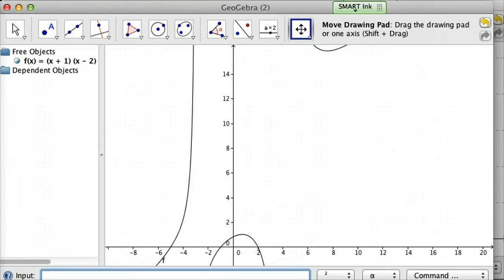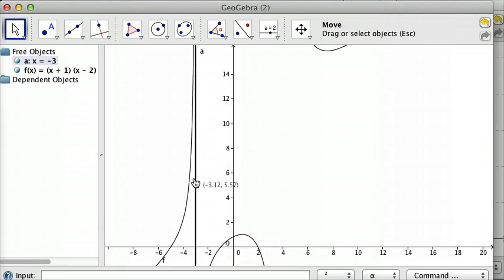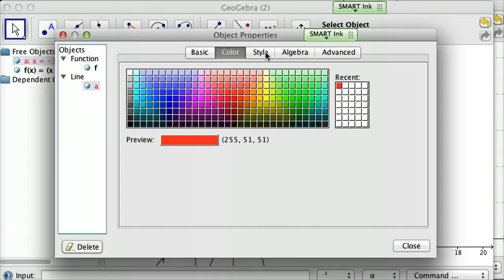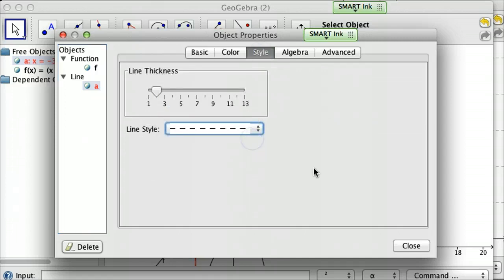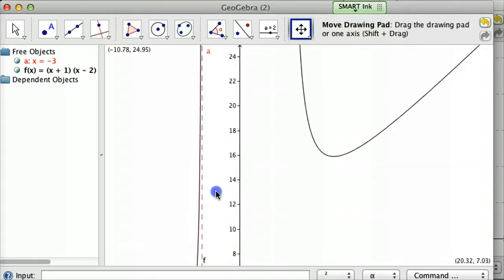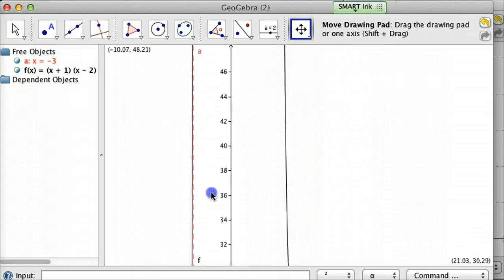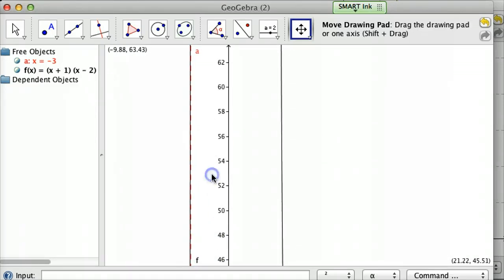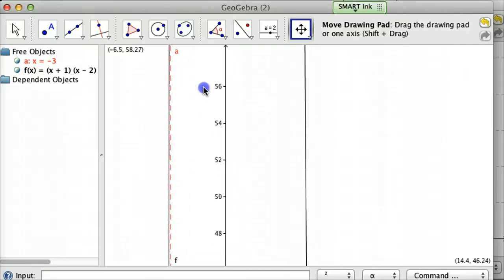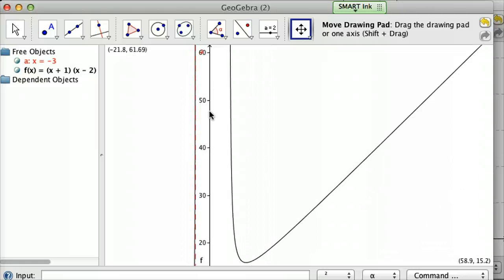So I'm going to type in X equals negative three. And there it is. I just popped in. I'll turn it a different color. Object properties, color, maybe red. Change it to a dotted line. And so there's an asymptote at negative three. And you can follow this thing as far up as you want. And it'll look like our black graph there and that dotted line converge. But if you zoom in, you'll see a difference. And no matter how high you go up, there'll always be a distance there. You just might have to zoom clear in to see it.